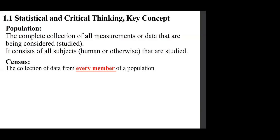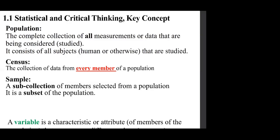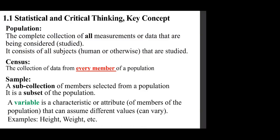Census: the collection of data from every member of the population. A sub-collection of members selected from a population is a subset of the population — that is a sample. A variable is a characteristic or attribute of members of the population that can assume different values or can vary. Examples are height, weight, etc.